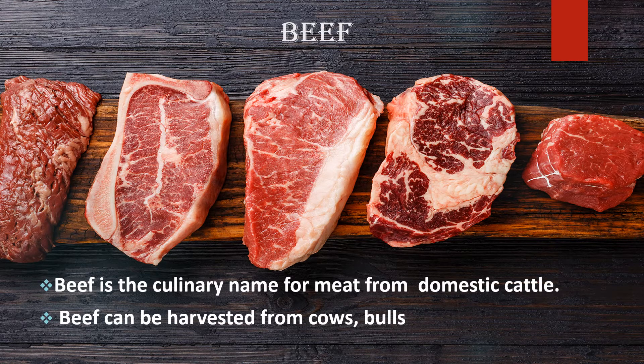Beef. It is one of the principal meats used in cuisines of the Middle East, Australia, Europe and United States. It is also important in Africa, parts of Asia and South Asia. Beef is considered prohibited food in most cultures like Hindus and Jains. Beef is highly concentrated with protein. Other parts of beef are also included in cuisines like oxtail, tongue, tripe, sweetbread and many more.